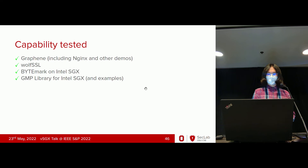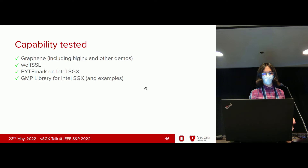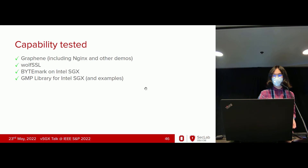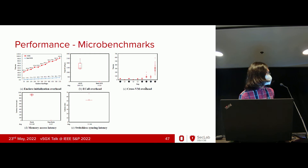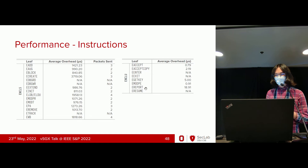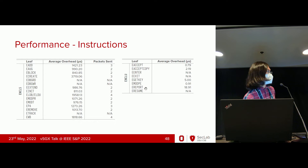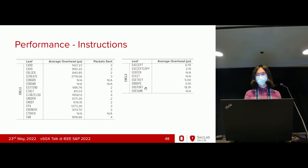We implemented our prototype using 16,000 lines of code, mostly in the kernel in C. We tested on an AMD EPYC 7251 processor. For capability, we can run OpenSSL, the NBench benchmark, the Intel GMP library for SGX, and as reviewers requested, we ran Graphene-SGX, which is a large library OS. The average overhead of an enclave system instruction is about one millisecond, and for enclave user instructions it can run as fast as 0.79 microseconds or about 1,891 microseconds when involving cryptographic actions.